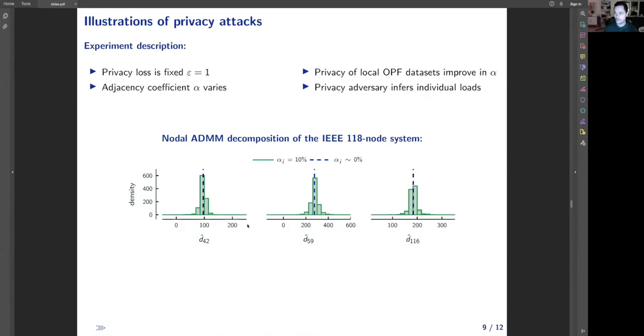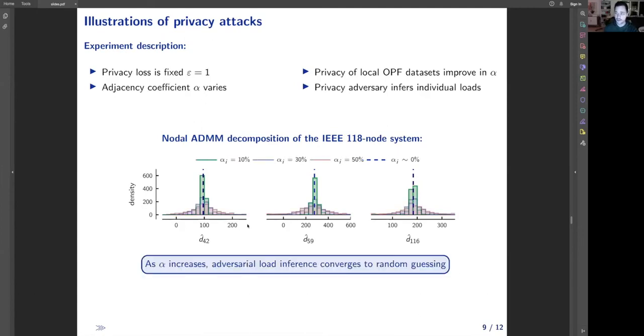But when we introduce some non-zero adjacency, the output of the query is a sample from the green distribution, and the adversary cannot tell the exact value of the load. When we increase alpha, we increase the variance of this distribution, and eventually the load inference reduces to random guessing.